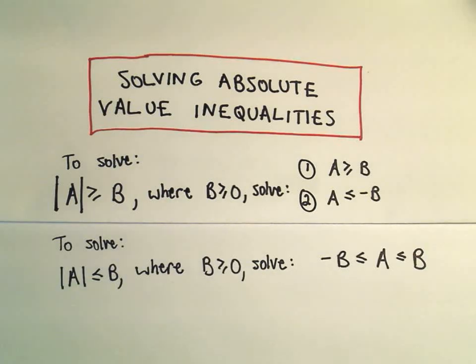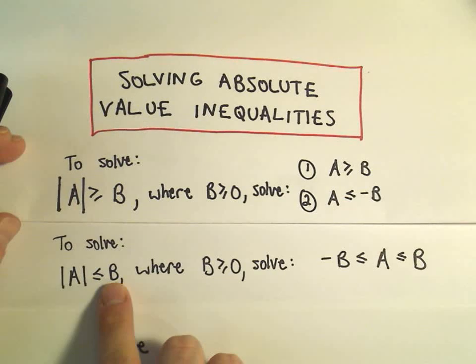Alright, in this video I'm going to do another example of solving an absolute value inequality. And I believe this inequality is going to be more of the second type. We're going to have the absolute value of something less than or equal to some positive number in this case.